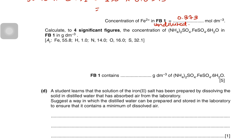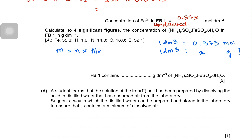The final part asks for the concentration of ammonium iron(II) sulfate hexahydrate to four significant figures in g/dm³. One dm³ contains 0.373 mol. Multiplying by the molar mass of 391.84 g/mol: mass = 391.84 × 0.373 = 146.1 g/dm³.